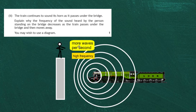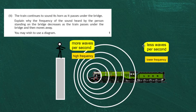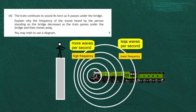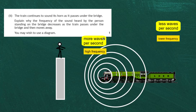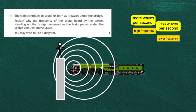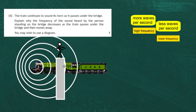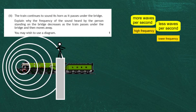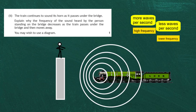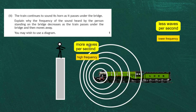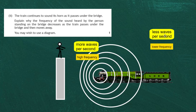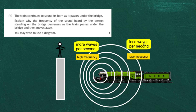At the back of the train the wavefronts are much further apart because the horn is moving away from them — this is the Doppler effect. As the train approaches the observer, more waves arrive per second giving a high frequency. But as the train passes and moves away, fewer waves arrive per second giving a lower frequency. At the front, waves are compressed; at the back, they are spread out, explaining the decrease in frequency heard as the train recedes.